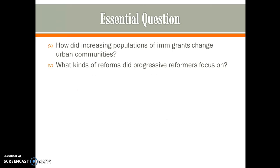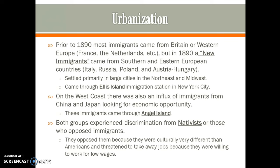The two questions to answer in your summary are: how did increasing populations of immigrants change urban communities, and what kind of reforms did progressive reformers focus on? Prior to 1890, most immigrants came from Britain or Western Europe — mainly the British Isles, where the first Americans came from. France and the Netherlands are other examples.